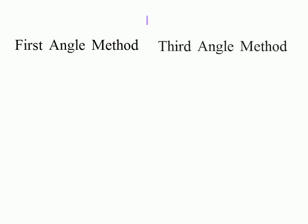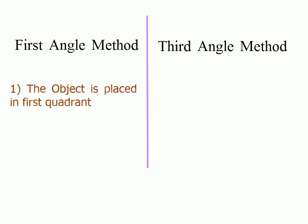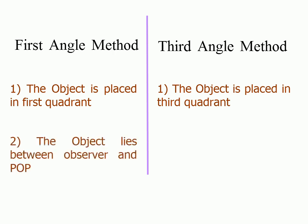In first angle method of projection, the object is placed in first quadrant, whereas in third angle method the object is placed in third quadrant. The object lies between observer and plane of projection in first angle. The plane of projection lies between observer and object in third angle.